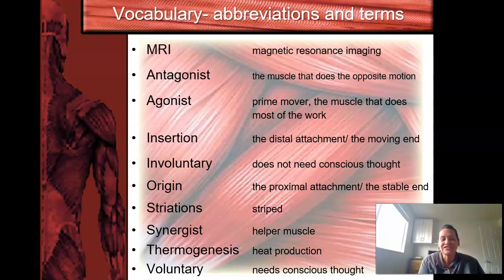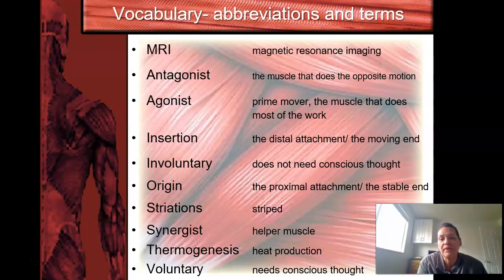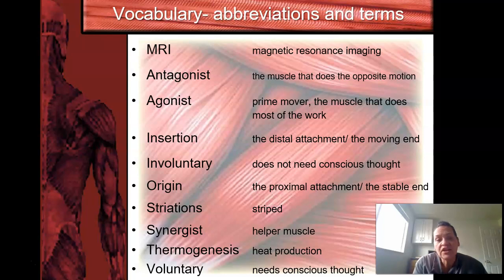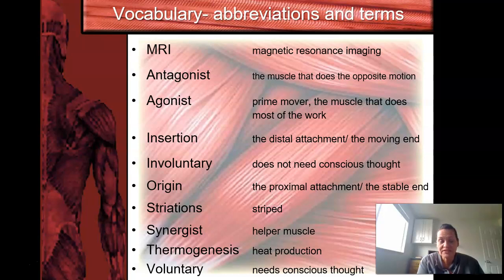Here are some abbreviations and terms. MRI stands for magnetic resonance imaging. An antagonist is the muscle that does the opposite motion — similar to how an antagonist in a story is the opposition. So antagonist means opposite motion of the muscle.